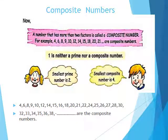Now for composite numbers: the numbers which are not prime numbers are composite numbers. A number that has more than 2 factors is called a composite number. For example, 4, 6, 8, 9, 10, 12, 14, 15, 18, 20 and 21 are composite numbers, because these numbers have more than 2 factors. Remember, 1 is neither a prime number nor a composite number.